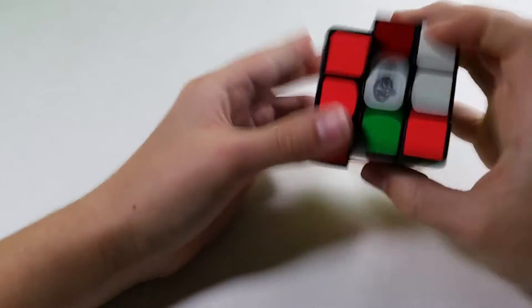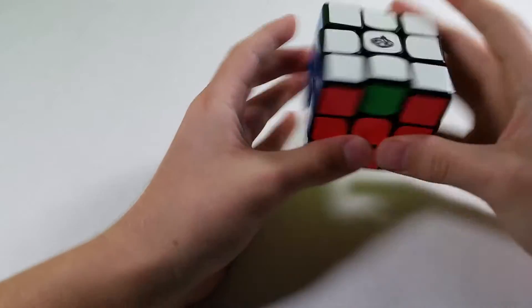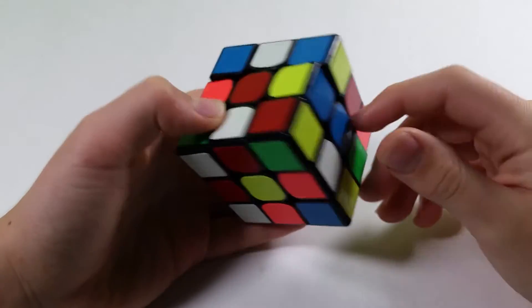Now OLL and PLL. We have a really easy scramble on yellow cross.